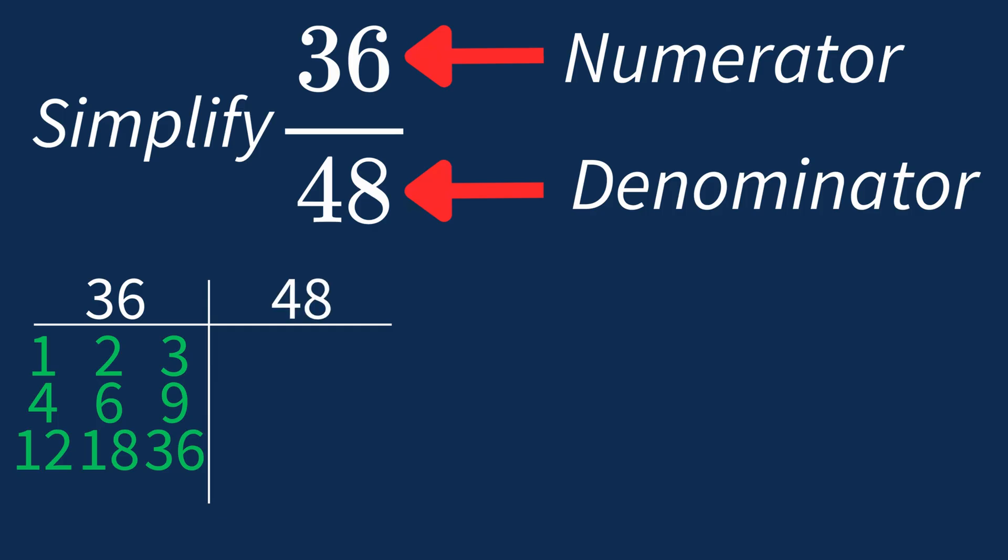For 48, the factors are 1, 2, 3, 4, 6, 8, 12, 16, 24, and 48. So the largest common factor between 36 and 48 is 12.